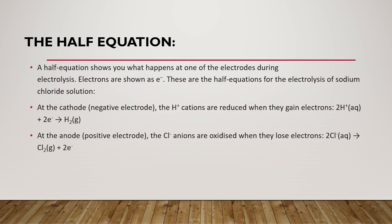At the anode, the Cl⁻ ions are oxidized when they lose electrons: 2Cl⁻ → Cl₂ + 2e⁻.